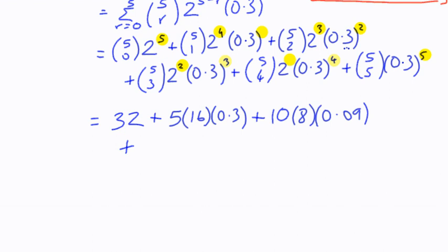And then 5 choose 3 is also 10, 2 squared is 4, and we've got 0.3 cubed. We know that 3 cubed is 27. We know the answer has to have 3 decimal places. 3 cubed is 27, and therefore my answer to that is 0.027.